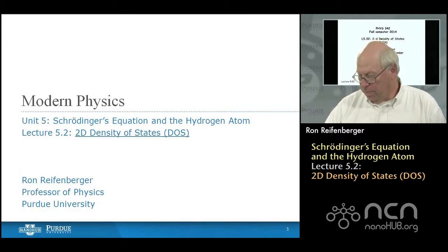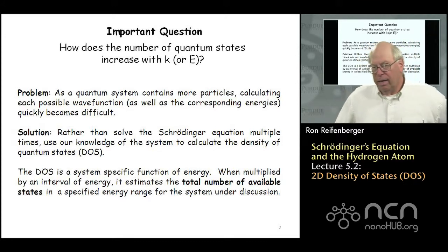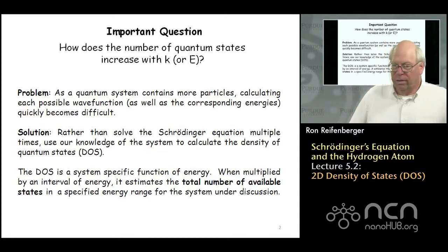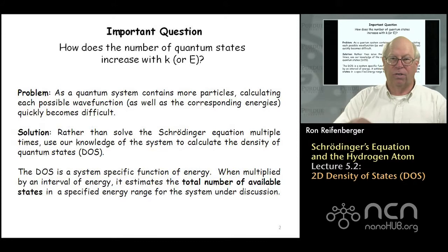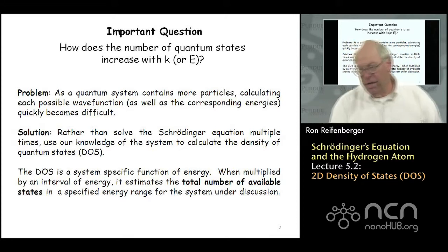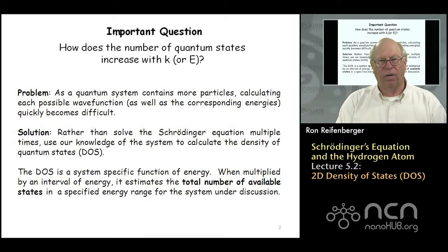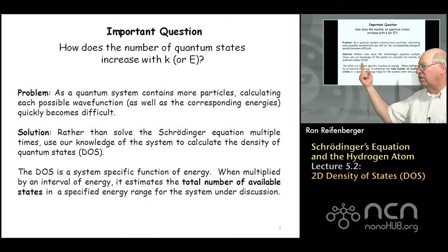The reason it's important is because the systems that you calculate become more complicated. They have more and more states available to them. If you have to calculate every possible wave function or all possible energies using Schrodinger's equation, that starts to become a time-limiting endeavor — you just can't do it, especially when you're dealing with systems that have tens or hundreds of particles. So it becomes important to have a way to approximate the number of states available to a particle in a quantum system. This is done by calculating something called the density of states, abbreviated DOS.